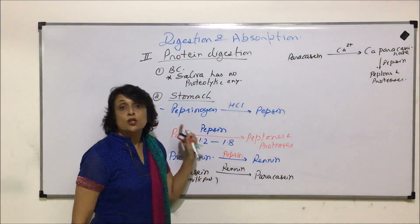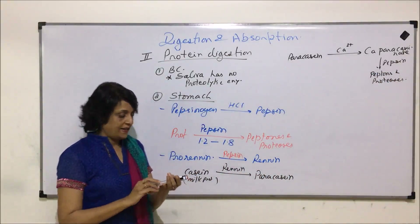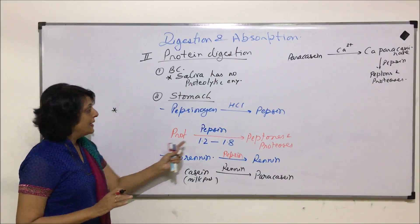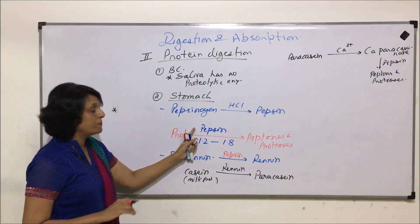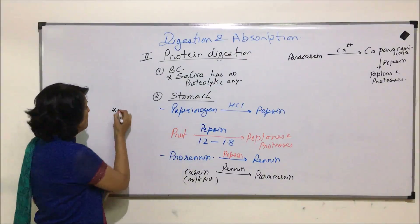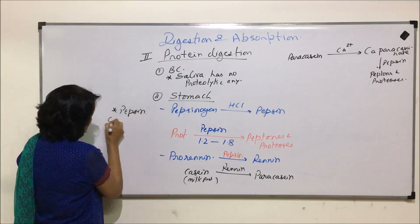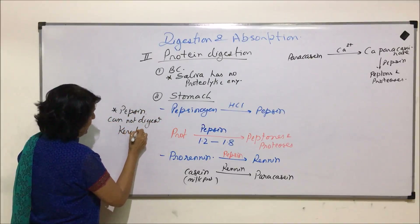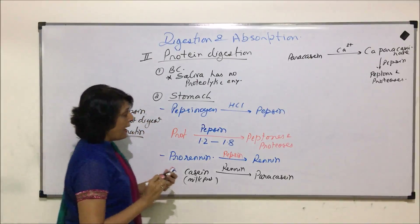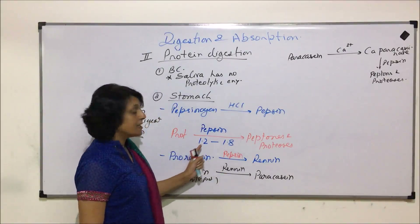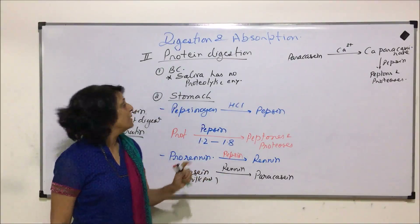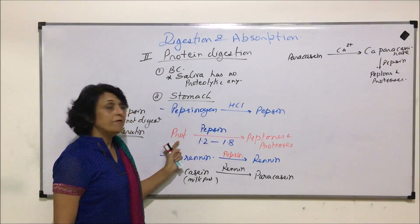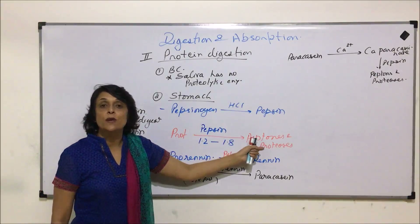Pepsin can digest all proteins except keratin. Keratin is found in hair, nails, and horns, and cannot be digested even by pepsin. Pepsin can digest all others, including collagen, but cannot digest keratin. These two — pepsin and renin — are the protein-digesting enzymes found in gastric juice in the stomach region.